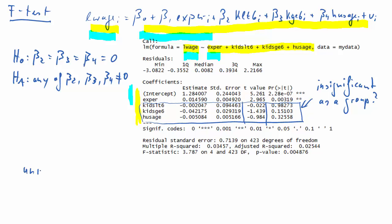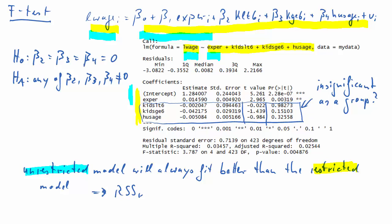Now, you know well that whenever you add more explanatory variables, the fit of the model would somewhat improve. So we can say that the unrestricted model will always fit better than the restricted model. Of course, if you listen carefully, you realize that I just got the colors wrong here. So restricted is blue and unrestricted yellow.